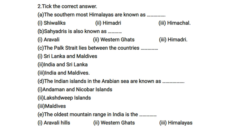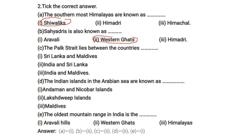Choose the correct answers: The southernmost Himalayas are known as the Shivaliks. The Sahyadris are also known as the Western Ghats. The Palk Strait lies between the countries India and Sri Lanka. The Indian islands in the Arabian Sea are known as the Lakshadweep Islands.